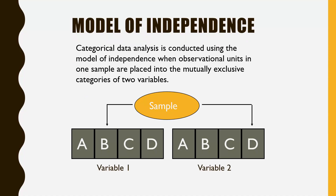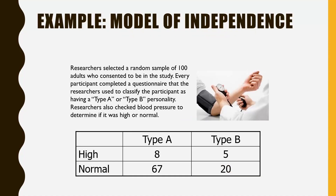Here's a diagram to clarify the model of independence. Categorical data analysis is conducted using the model of independence when observational units in one sample are placed into the mutually exclusive categories of two variables — a single sample where every participant is classified on two categorical variables. Here's an example: researchers selected a random sample of 100 adults, classified each as having a type A or type B personality, and also checked blood pressure to determine if it was high or normal.